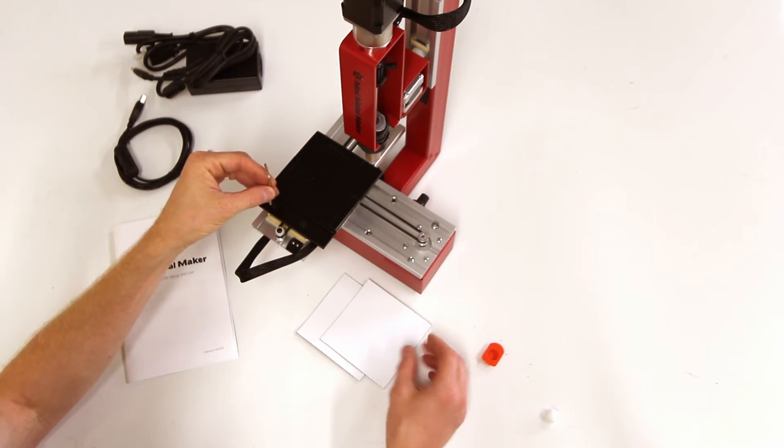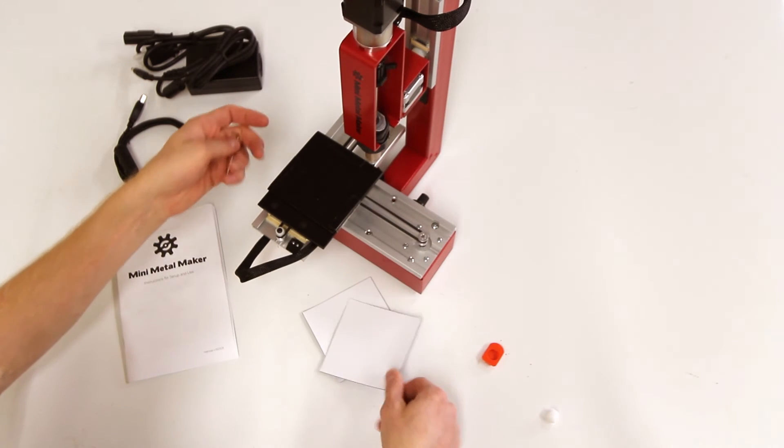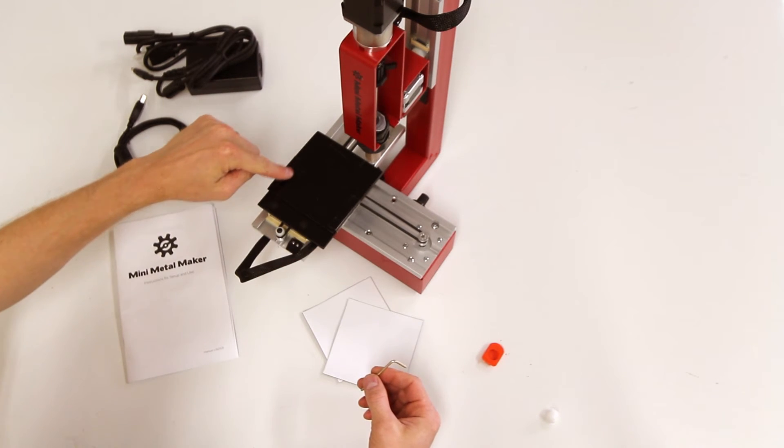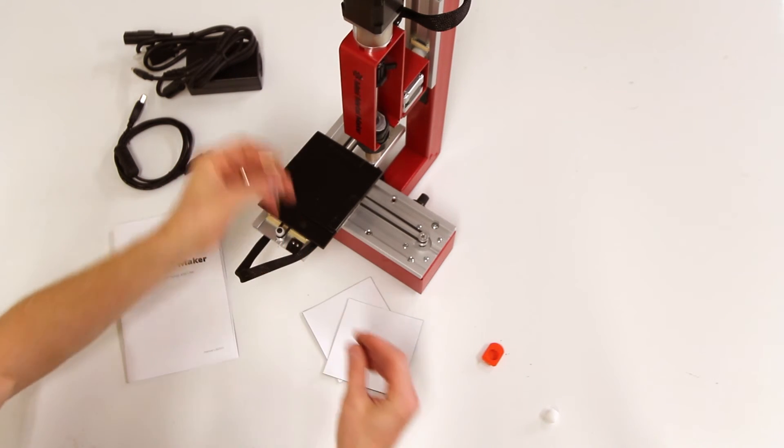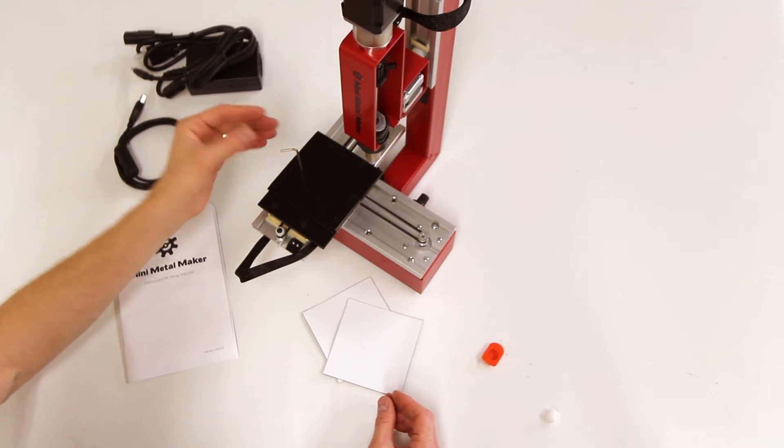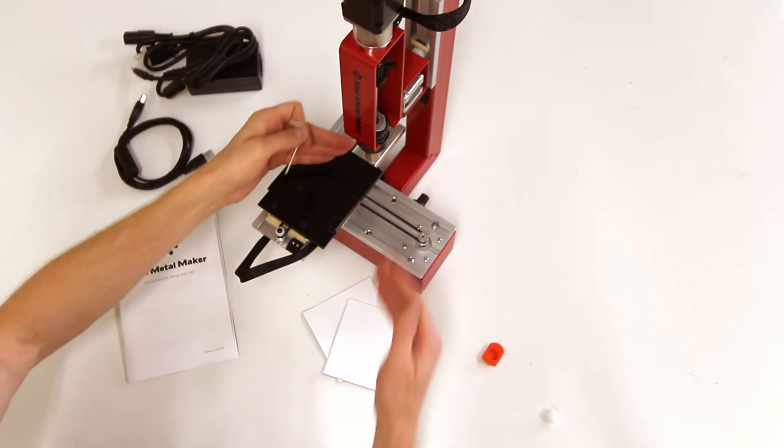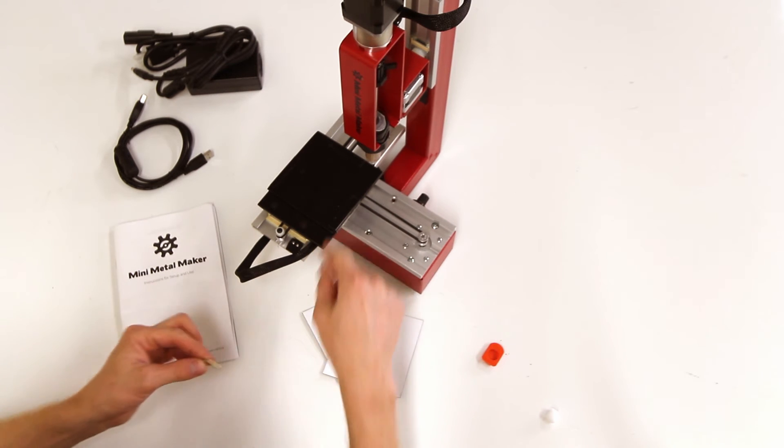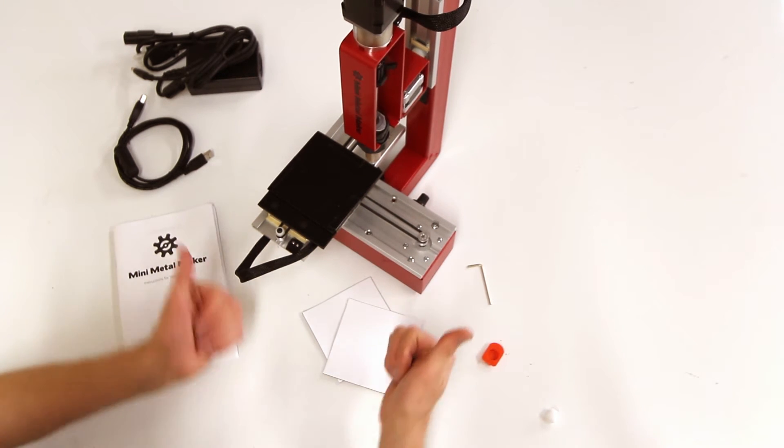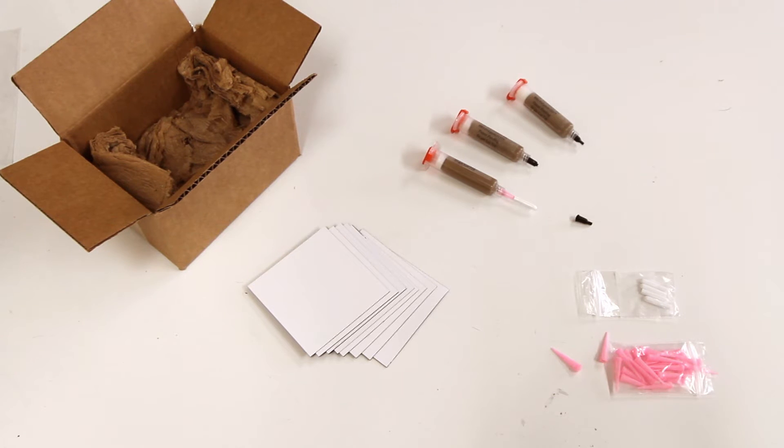So if you take off the build plate, there are three leveling screws: there, there, and there. And you'll see in another video how to adjust the leveling so that when you go to print, the tip is at exactly the right level and everything works out great. The next thing I wanted to show you is the contents of the Mini Metal Maker Supply Starter Pack.